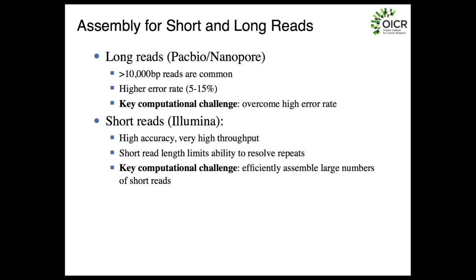For Illumina sequencing, the method we're going to talk about is based on De Bruijn graphs, which use k-mers. You want to sequence really deeply to be able to use long k-mers to get around repeat problems. The coverage trade-off is different between short and long reads — mainly the trade-off is between overlap length and accuracy. The key computational challenge for Illumina sequencing is making your software and algorithms computationally efficient enough to complete the assembly in a reasonable amount of time.